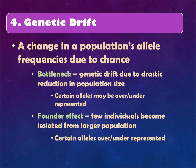Genetic drift is any change in a population due to chance — not natural selection. There are two main types. A bottleneck effect is genetic drift caused by a drastic, sudden, random reduction in population size — like a natural disaster. Certain alleles may be over- or underrepresented purely by chance, not by survival advantage. The founder effect is where a few individuals become isolated or move to a new place, and again the individuals that move are chosen totally randomly, which can change the allele frequencies in that new population.